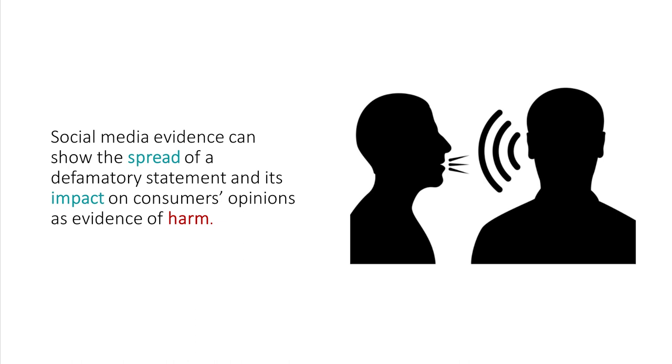Once defamatory information is posted online, it can quickly spread to a large audience, either generating negative first impressions or building negative associations with the defamed party. Because negative information is sticky and enduring, repairing the reputation of an individual or company can be very challenging. Defamation lawsuits also require evidence of harm. An analysis of social media offers several ways to measure how the defamatory information was received by the public, and can provide insight into whether and to what extent beliefs about a plaintiff changed after a defamatory statement. Changes to the public sentiment about the plaintiff can be thought of as harm to the reputation and brand identity of the plaintiff. This sort of reputational harm can occur alone or alongside other forms of harm such as lost business.